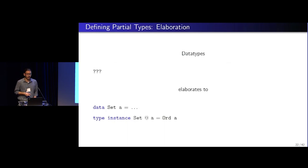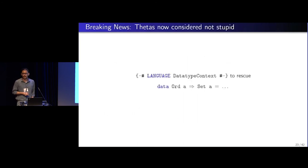The next thing that we would want to do is to see how can we associate the partiality of the data type, right? We need something that elaborates to this particular type instance that says that set at a holds exactly when odd a holds. Well, there is something that Haskell already has, right? It's not loved enough, but I think it should be. We can finally use this.